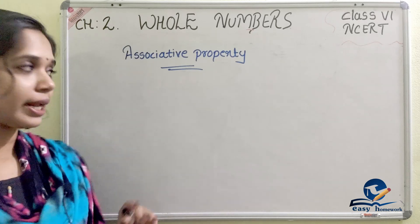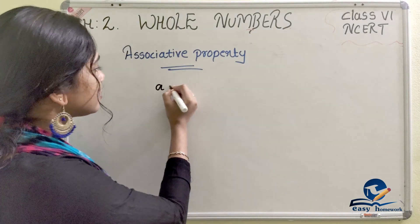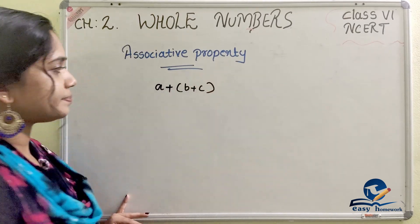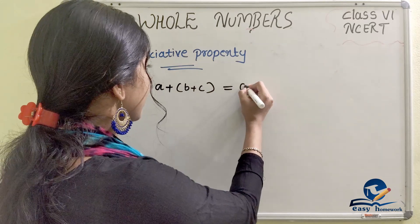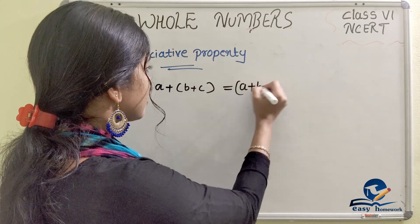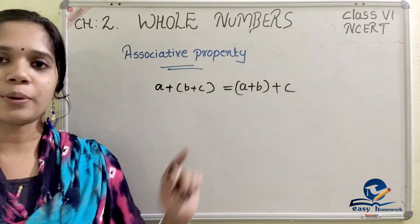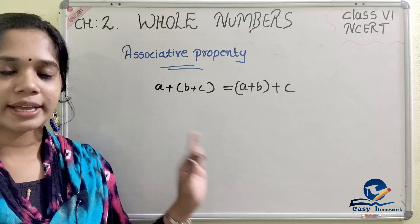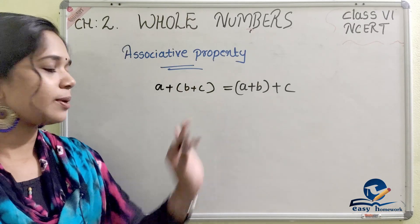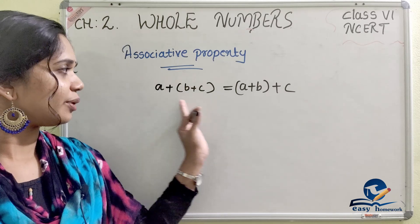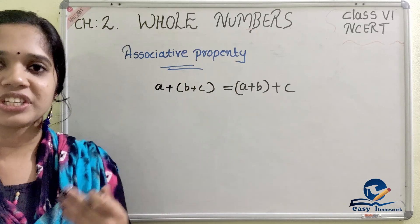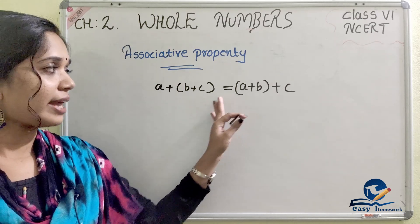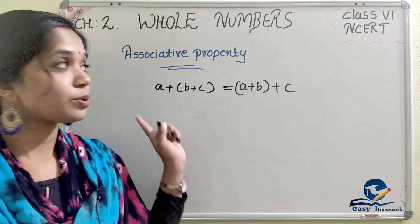What is the associative property? Let's look at this: A plus B plus C. A, B, and C are whole numbers. If we use the numbers in any order, we will get the same result — that is the associative property.